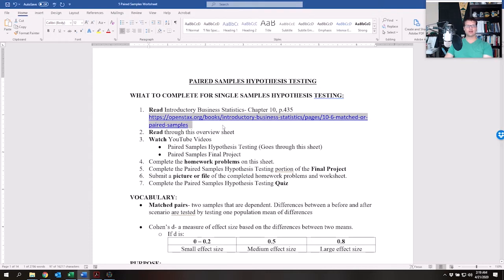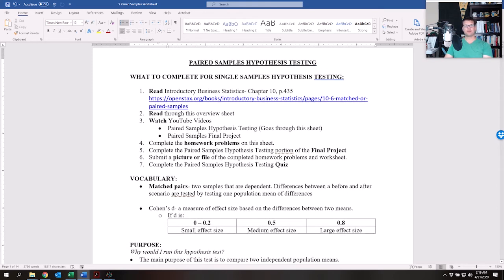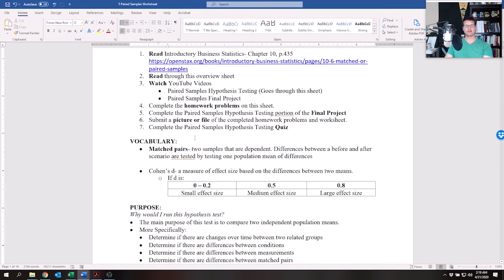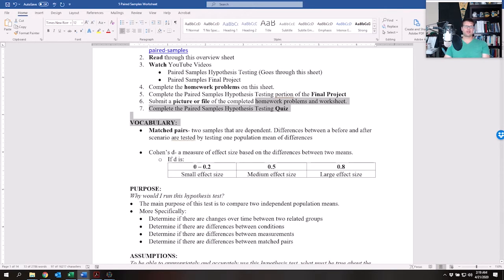Next, read through this overview sheet, watch the YouTube videos. We're going through the paired samples hypothesis testing right now, and then the paired samples final project file will bring you through how to do the final project portion. Then complete the homework problems on this sheet, complete the paired samples hypothesis testing portion of the final project, submit a picture of the completed homework from this worksheet, and complete the paired samples hypothesis testing quiz.